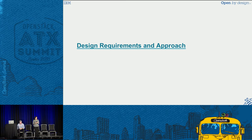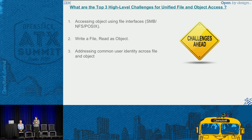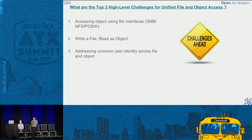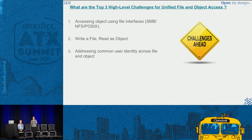In the next few slides we are going to go over the design and approaches of implementing this solution. But first, we'll look at what the top three challenges are for this kind of implementation. We need to address: the ability to access objects from the object interface that have been ingested as files; the ability to access files from file interfaces like NFS, SMB, and POSIX that have been ingested as objects; and the third challenge is common user identity across both file and object protocols.